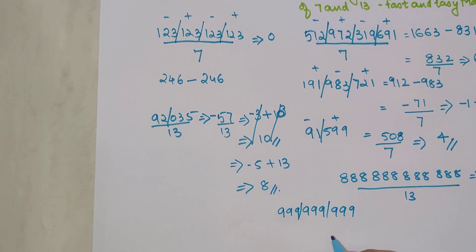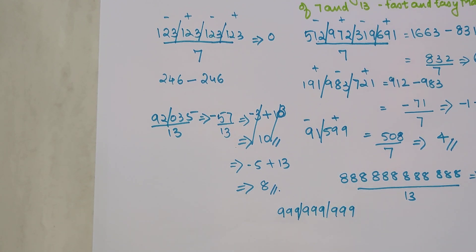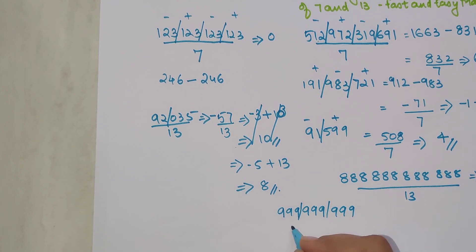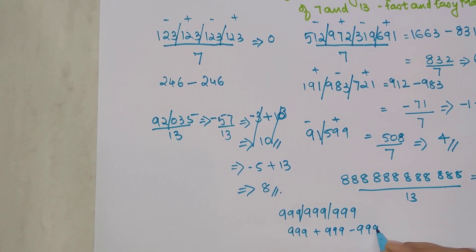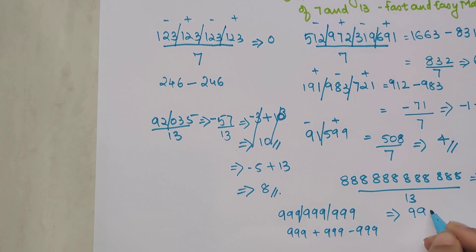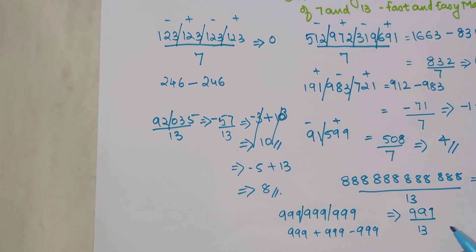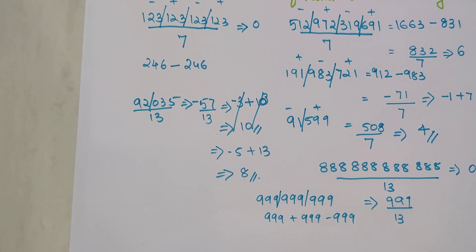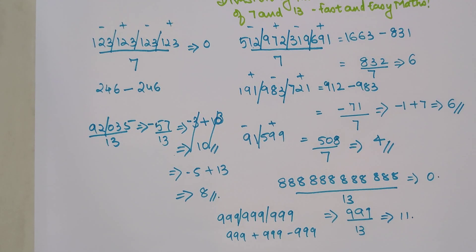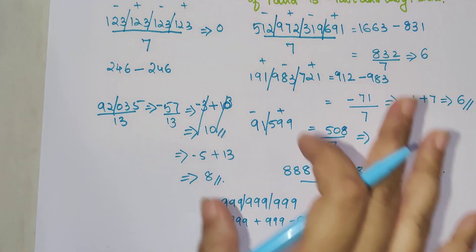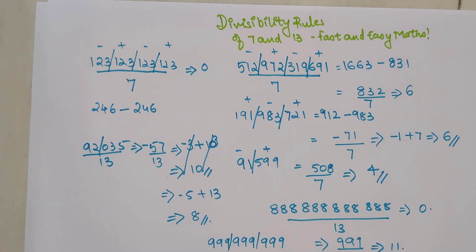Now forget that — let's say we have 999999999 (three groups of 999). The alternating signs give: 999 − 999 + 999, which simplifies to 999. When I divide 999 by 13, the remainder comes out to be 11. You saw how easy this was — in a matter of seconds we are solving these kinds of sums.